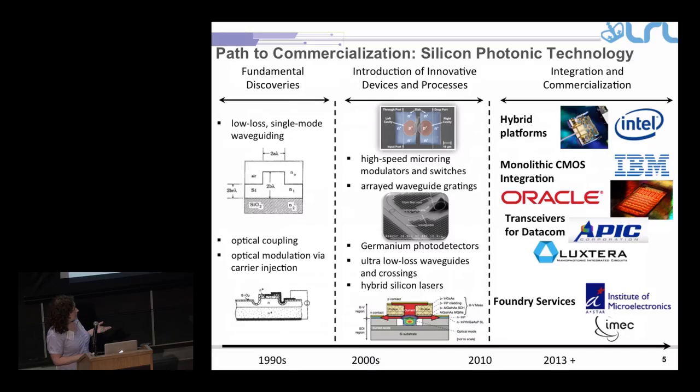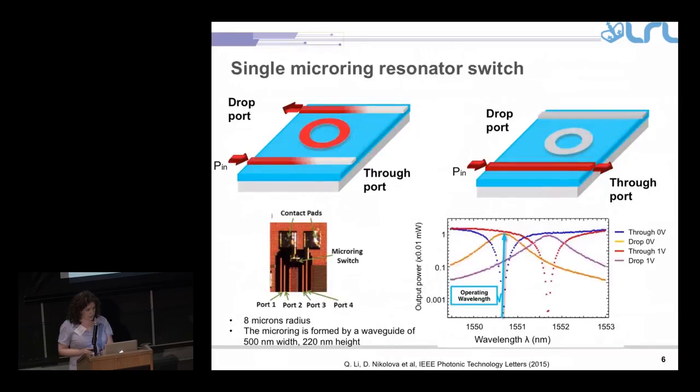There are also foundry services, like in Singapore, in Belgium, where you can go and for three thousand dollars, you can have ten modulators for research purposes.